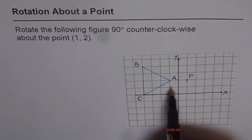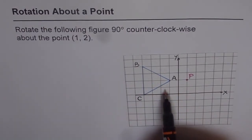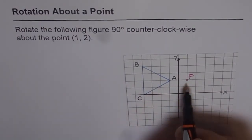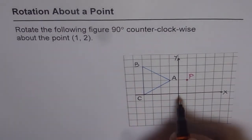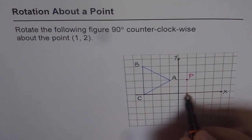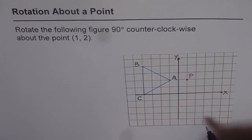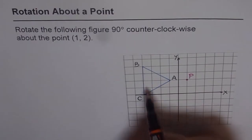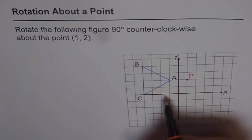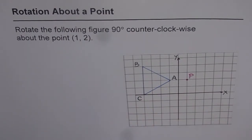The figure is a triangle ABC given to us in quadrant 2. The point of rotation is point P, which is at (1, 2) — so 1 is the x-coordinate and 2 is the y-coordinate. We need to rotate triangle ABC counterclockwise 90 degrees.